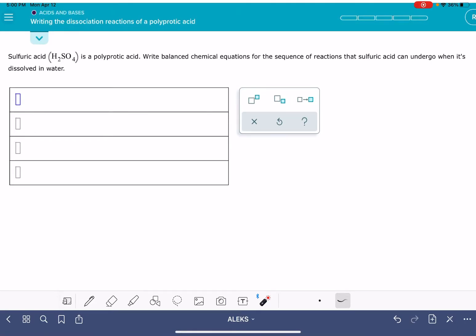In this video, I'm going to show you how to solve the ALEKS problem called writing the dissociation reactions of a polyprotic acid. A polyprotic acid is one that has more than one hydrogen atom that can be lost in an acid-base reaction.